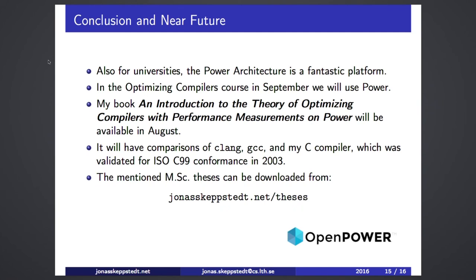In conclusion, using Power machines is a very good idea also for universities. In the near future — actually in September — we will use Power for a course on optimizing compilers. We will use a book coming in August, which will have performance measurements on several different compilers for Power: Clang, GCC, and possibly XLC. I also have my own C compiler, validated for C99 thirteen years ago. You can download the relevant master's thesis from my personal webpage shown here. Thank you very much for listening, and I'm happy to answer any questions.